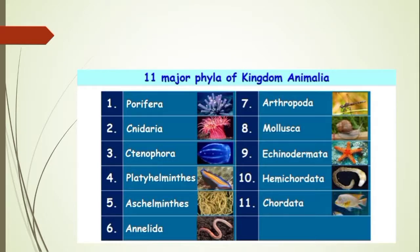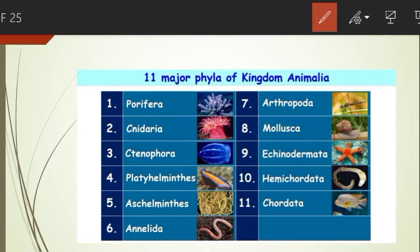All the animals present on earth are classified into 11 major phyla. In other words, kingdom Animalia has 11 major phyla — singular is phylum and plural is phyla. The 11 major phyla are: Porifera, Cnidaria or Ctenophora, Platyhelminthes, Aschelminthes, Annelida, Arthropoda, Mollusca, Echinodermata, Hemichordata, and Chordata.